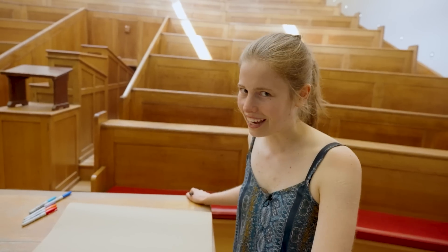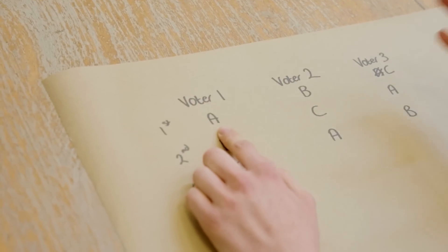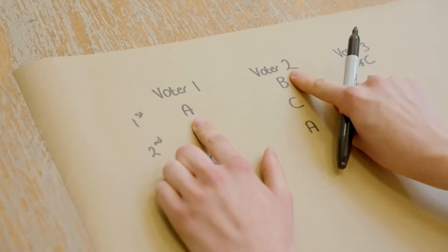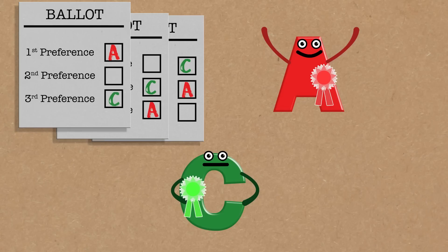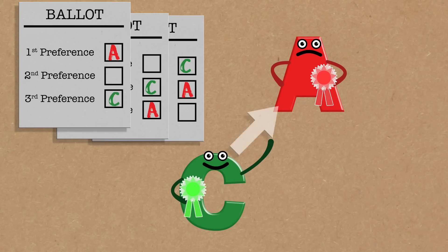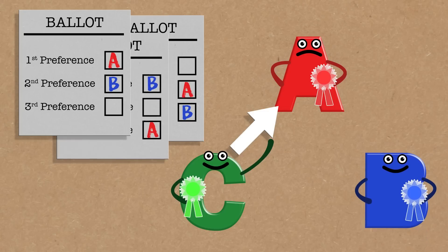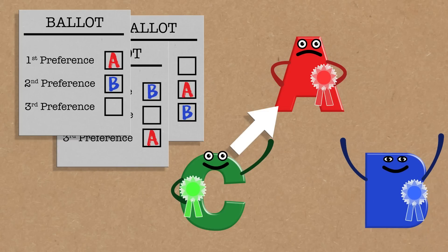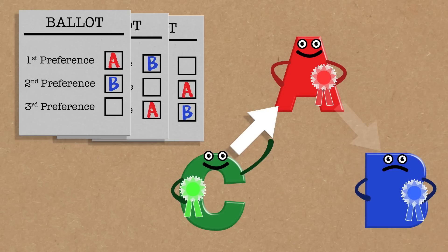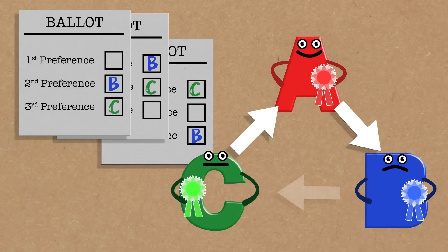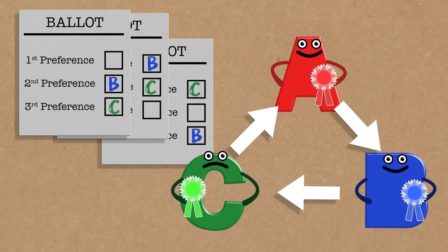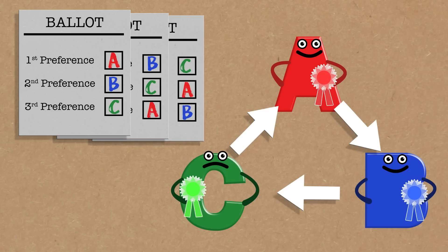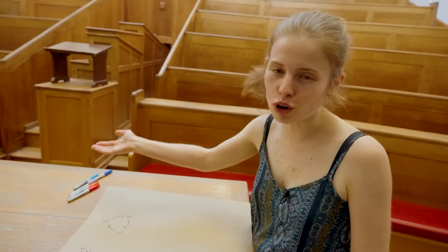So who should win this election? Suppose we choose A, because A is the top choice of Voter 1 — but both Voter 2 and Voter 3 prefer C over A. So if we look at A and C, C beats A. What about B? Well, B is Voter 2's preference, but both Voter 1 and Voter 3 prefer A to B, so A beats B. But in a similar way, B beats C, because Voter 1 and Voter 2 both prefer B to C. So we've got this loop — we can't really decide who wins. And this is going to be a familiar thing to everyone, because this is rock, paper, scissors, right?